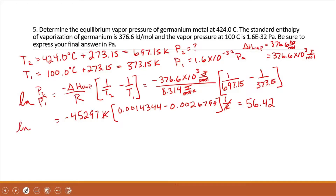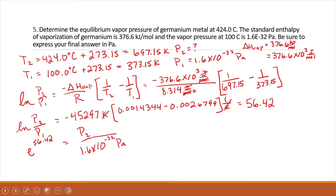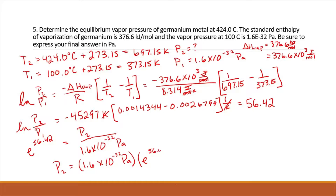So plugging in P2 over P1: e to the 56.42 equals P2 over P1, and P1 is 1.6 times 10 to the negative 32 pascals. Therefore P2 equals 1.6 times 10 to the negative 32 pascals times e to the 56.42, which is 5.08 times 10 to the negative 8 pascals.